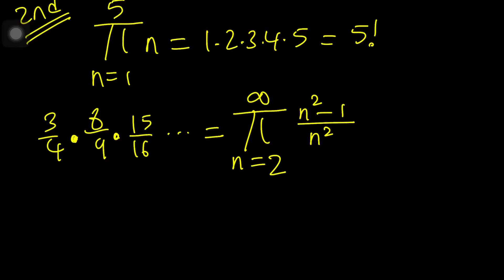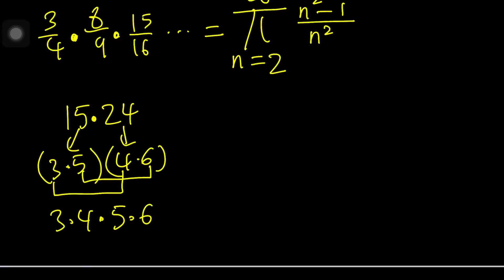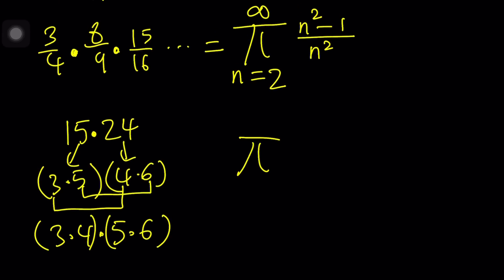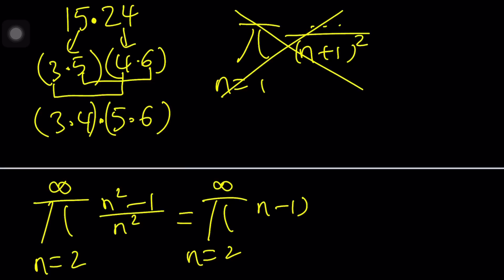Because we have a product, we can split it into products. For example, 15 times 24 can be written as 3 times 5 and 4 times 6, and you can rearrange to get 3 times 4 and 5 times 6 — same answer, different grouping. So we're going to rearrange this: n equals 2 to infinity, and I want n squared at the bottom. The numerator is n squared minus 1, which is a difference of two squares — how beautiful! We can factor it into n minus 1 times n plus 1, and we can write n squared as n times n.